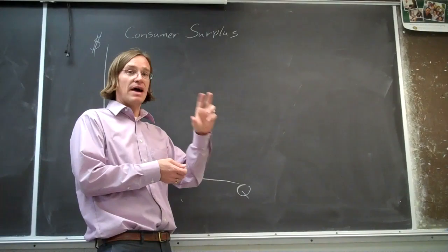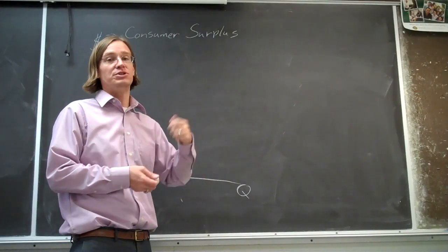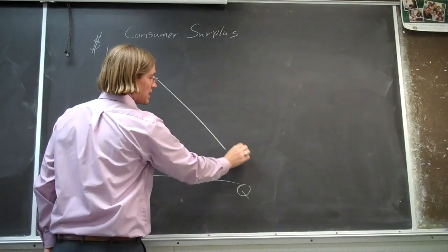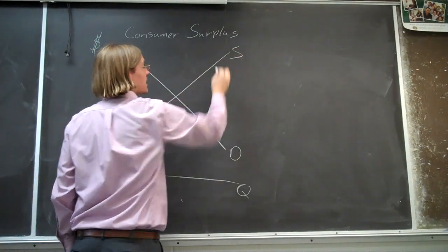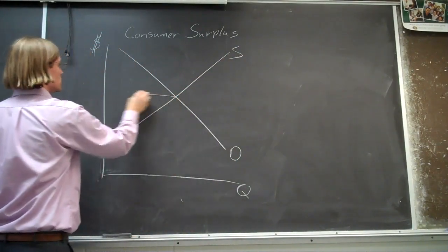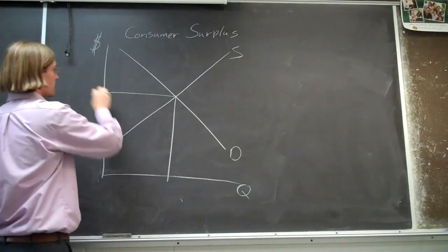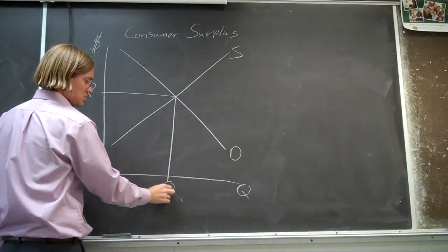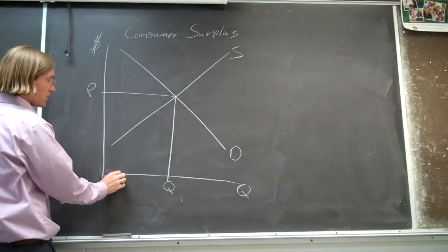It's that additional value above what you had to pay for. So let's draw your demand curve, the supply of hamburgers. You paid the equilibrium price and you got one hamburger.